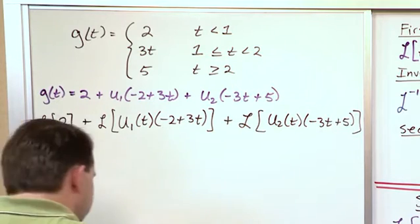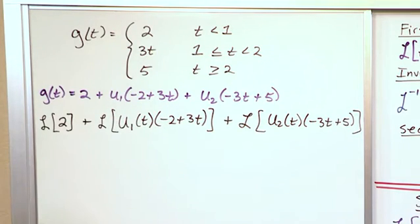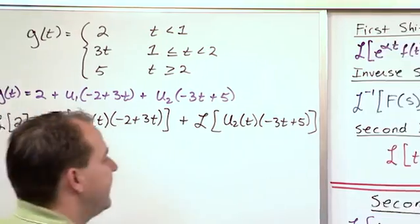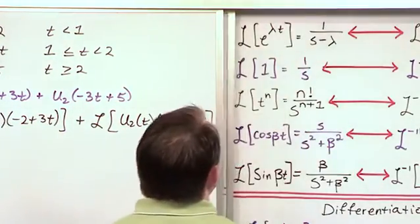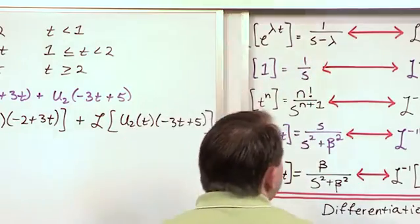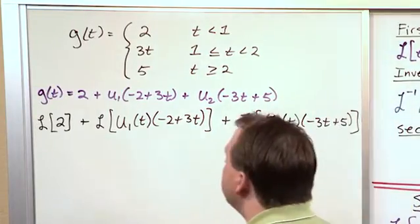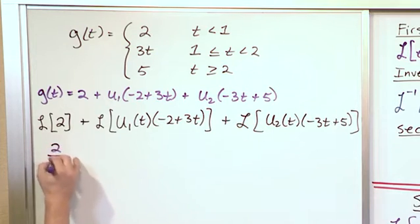So we look at the Laplace Transform of 2. It's a constant, and you can think of pulling it out — it's basically like taking the Laplace Transform of 1, which gives 1 over s. So because we have a 2 there, this Laplace Transform is the easiest thing on the board: it's 2 over s.